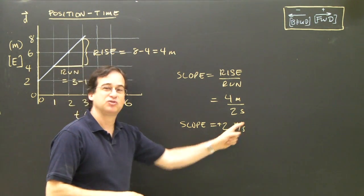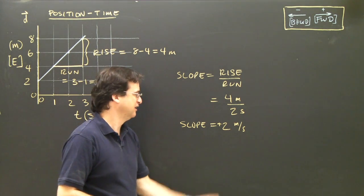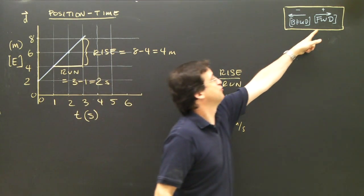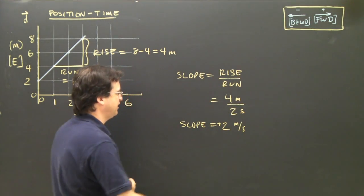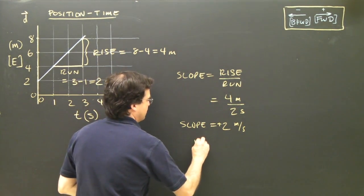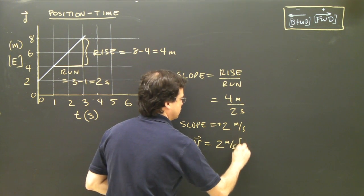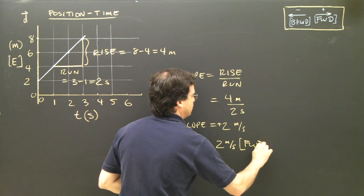So, the slope is 2 meters per second. That's a velocity. And the positive or negative tells me if it's forward or backwards. Positive is forward. And in this case, forward is east. So, we can say the velocity is 2 meters per second square bracket forward.